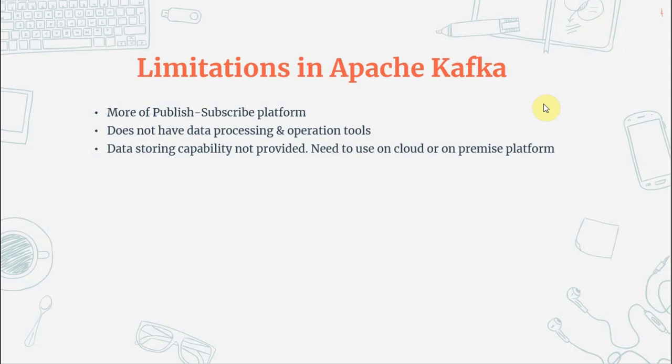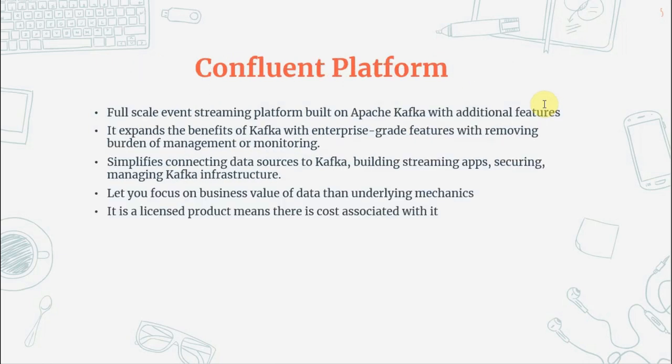So what comes to our rescue? There is another product called Confluent Platform. Confluent is a full-scale event streaming platform built on Apache Kafka with additional features. It expands the benefits of Kafka with enterprise-grade features, removing the burden of management and monitoring. It simplifies connecting data sources to Kafka, building streaming applications, and securing, monitoring, and managing Kafka infrastructure — letting you focus on the business value of data rather than the underlying mechanics. Note that Confluent Platform is a licensed product, meaning there is a cost associated with it.